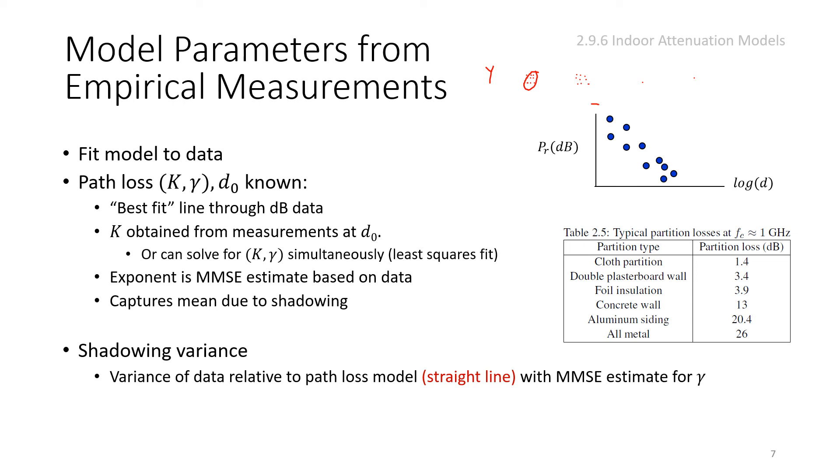Ideally, fit a straight line to the data. We fit a model to data: K, gamma related to slope, and get the best fit for the dB case. K is measured at relative distance d-naught. We can solve for K, d-naught, and gamma from measurement by minimizing least square error. The exponent is MMSE estimate based on data, capturing mean due to shadowing.